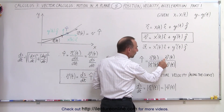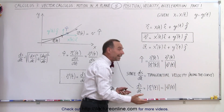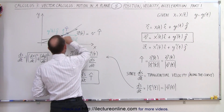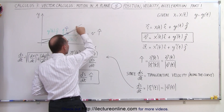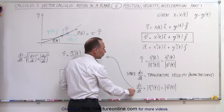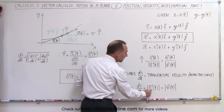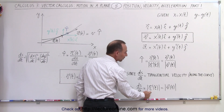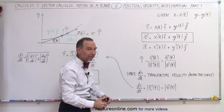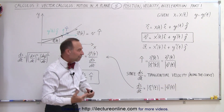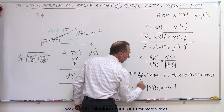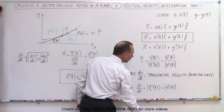We also remember that ds/dt — the speed at which we move along the curve — is called the tangential velocity along the curve. It can be defined as the magnitude of the first derivative of the position vector, i.e., the magnitude of the velocity vector. Since ds/dt is a magnitude, it is not a vector quantity.